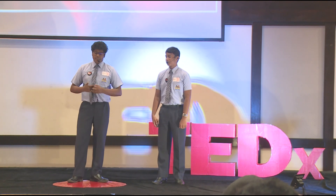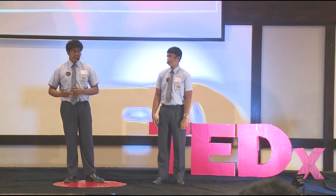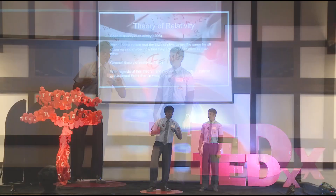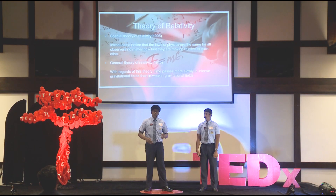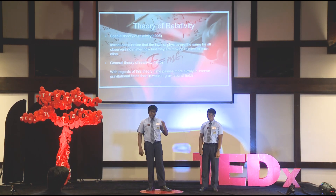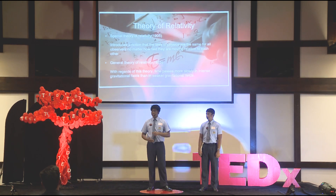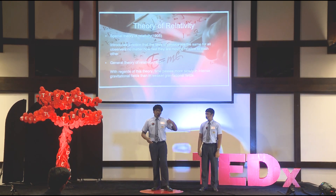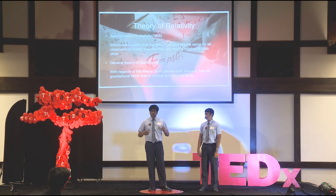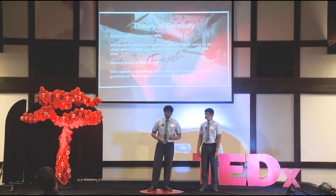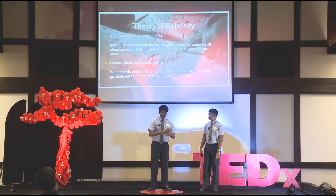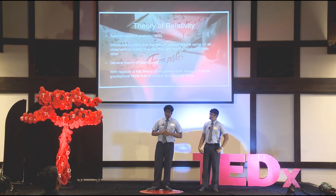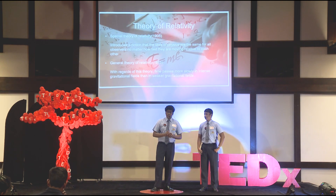Einstein continued to research for 10 years and then published the general theory of relativity in 1915. This time he considers gravity as well. What he's stating is that time passes more slowly in intense gravitational fields compared to weaker ones. Large objects such as planets and stars are basically a fabric of space-time itself, and that's where we perceive gravity. Since we are considering gravity here as well, time continues to dilate if you are able to create an area of large gravitational fields.